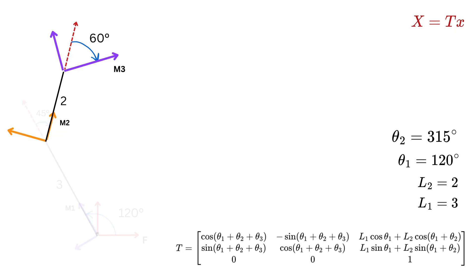Again, don't fall into the trap of considering theta 3 as 60 degrees because, just like before, we have to think about the rotation from frame M2 to frame M3 in the counterclockwise direction. The 60 degrees shown here is in the clockwise direction. So the correct theta 3 will be 360 minus 60, which is 300 degrees.